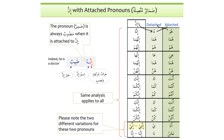Whenever an attached pronoun is used with inna — for example, 'innahu tabibun' — the attached pronoun (hu, huma, hum, ha, etc.) will always serve as ismu inna, and the noun that follows it will be khabaru inna. So inna is harfu tawqeedin wa nasbin, the attached pronoun is ismu inna, and the following noun is khabaru inna.